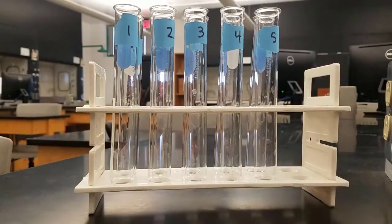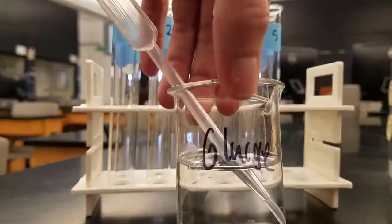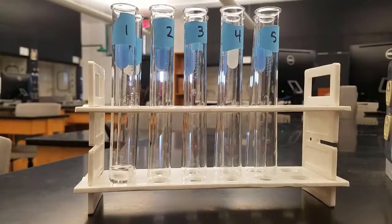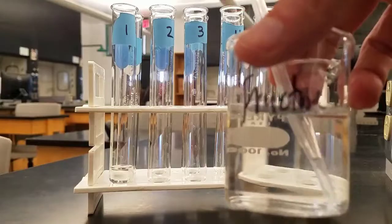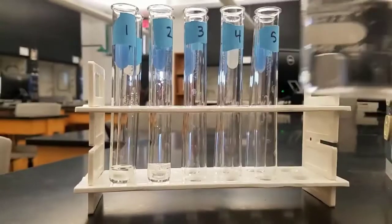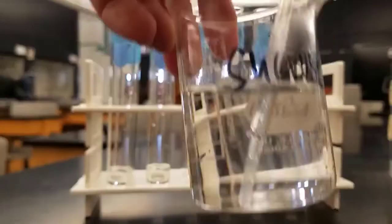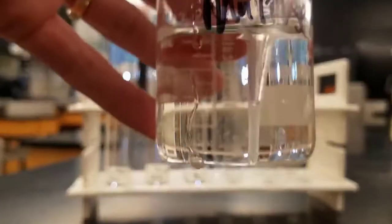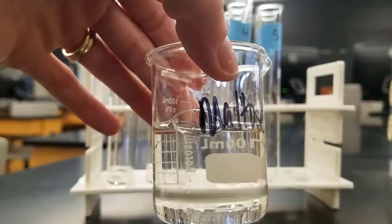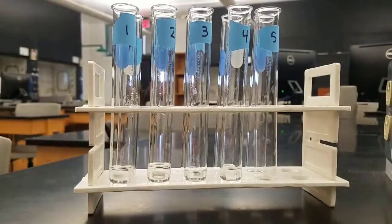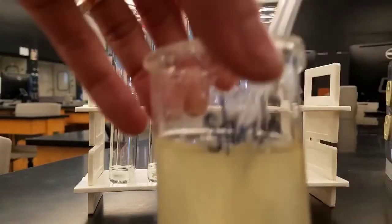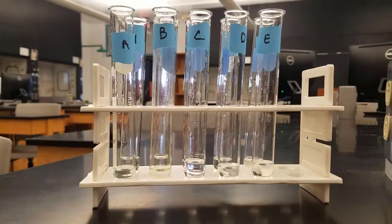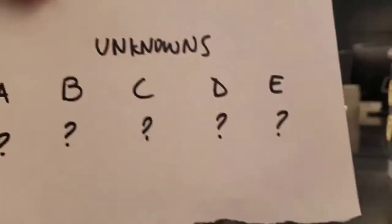For Seliwanoff's test we follow the procedure for part B. First, we add one milliliter of sugar solution to each test tube: glucose into the first, fructose into the second, sucrose — table sugar dissolved in water — into the third, maltose into the fourth, and the polysaccharide starch into the fifth. You can see starch doesn't fully dissolve, so that solution is a little cloudy.